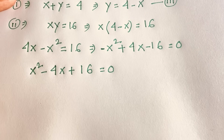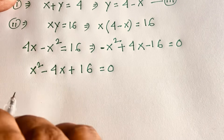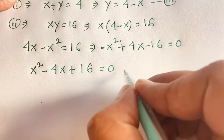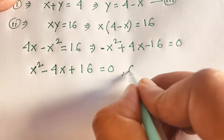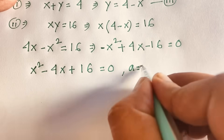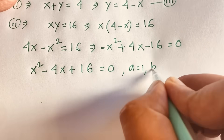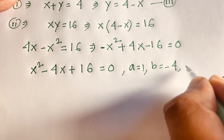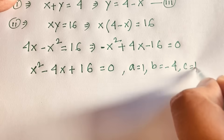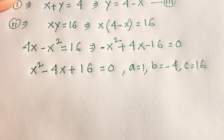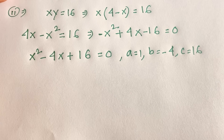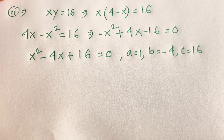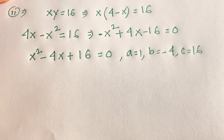From this quadratic equation I identify the coefficients: a equals 1, b equals negative 4, and c equals 16.